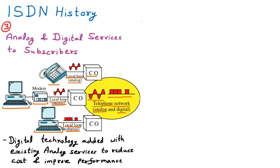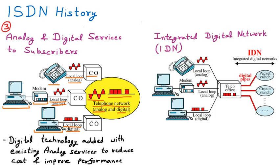So there are three things: one is the telephone, one is via modem to work on a PC and access the internet, and one is the direct digital line. These are the things in ISDN history for the third stage — analog and digital services to subscribers. This made services more cost-effective and improved performance. The fourth stage is called IDN — Integrated Digital Network.